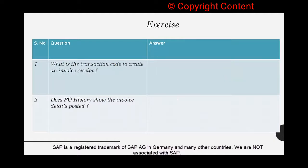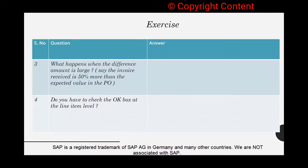The exercise questions are: first, what is the transaction code to create an invoice receipt? Second, does PO history show the invoice detail posted? Third, what happens when the difference amount is large — meaning the difference between what has been posted versus the original PO amount? Fourth, do you have to check the OK box at the line item level of the invoice?